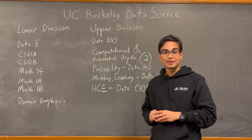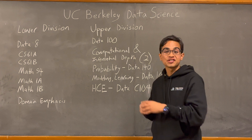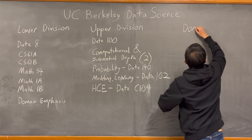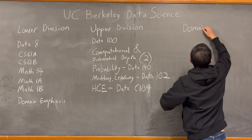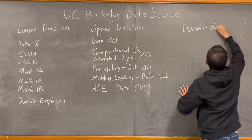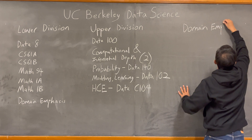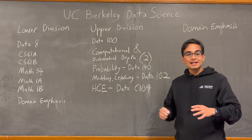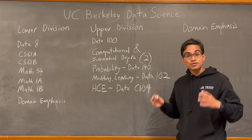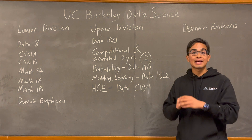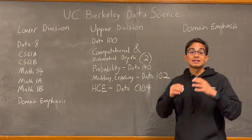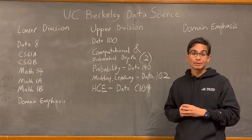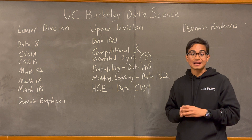That wraps up the upper division requirements, and now let's move on to Domain Emphasis. Data Science is an interdisciplinary major, and therefore the UC Berkeley curriculum requires that students take up a Domain Emphasis — a set of courses in another field or department that allow you to become specialized in a particular domain so that you will be an effective Data Science practitioner.